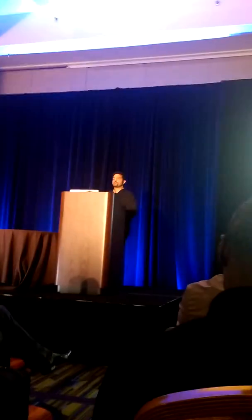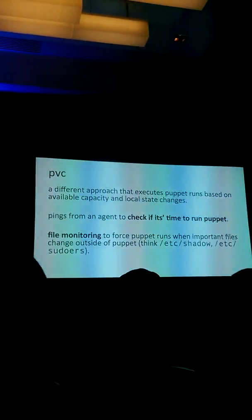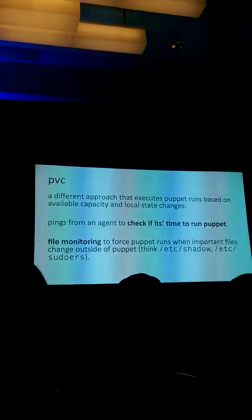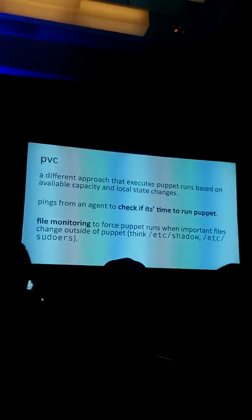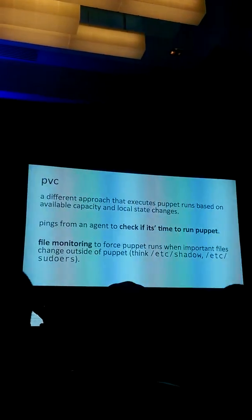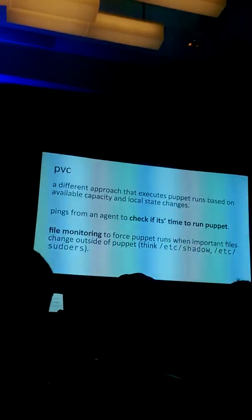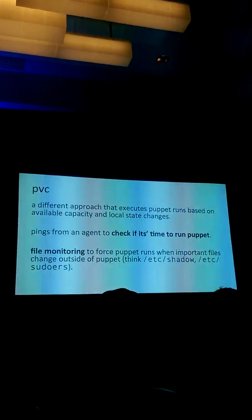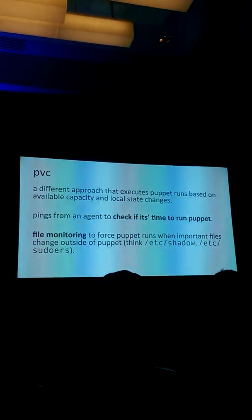If something changes, I don't want to wait for the next puppet run — I want Puppet to be triggered. It's a different approach. Instead of running the Puppet Agent Daemon, you run PVC. And PVC is just a batch script. It runs a sub-show, which basically calls out to a backend.